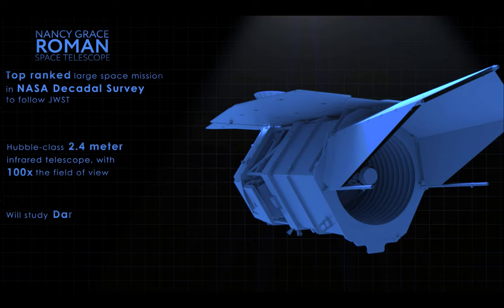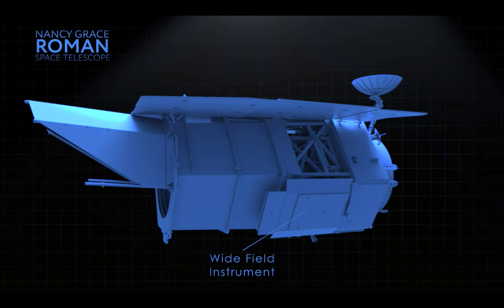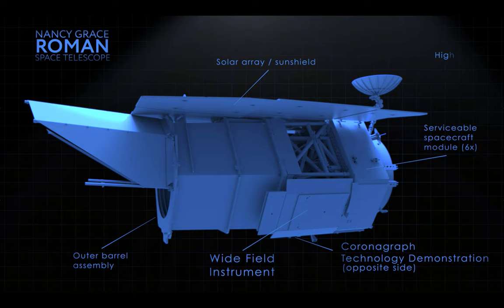It is designed to study dark energy, exoplanets and astrophysics in general. The satellite is equipped with a wide field instrument which is noted here, a solar array sunshield, a spacecraft module, a coronagraph which we use for technology demonstrations and also has a high-gain antenna which is for fast data transfer.